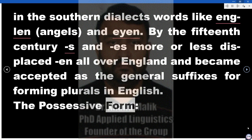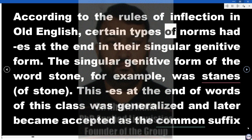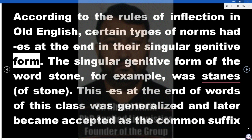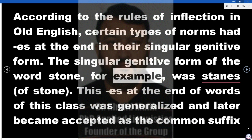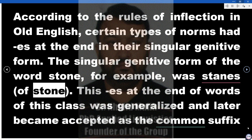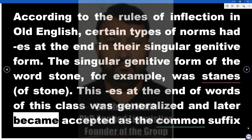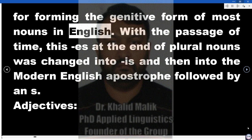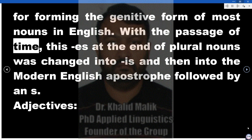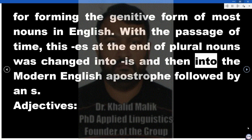The Possessive Form. According to the rules of inflection in Old English, certain types of nouns had -es at the end in their singular genitive form. The singular genitive form of the word 'stone', for example, was 'stanes' (of stone). This -es at the end of words of this class was generalized and later became accepted as the common suffix for forming the genitive form of most nouns in English. With the passage of time, this -es at the end of plural nouns was changed into -is and then into the Modern English apostrophe followed by an s.